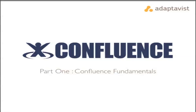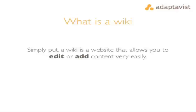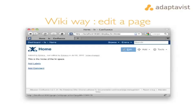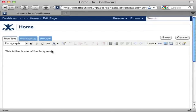It's useful to know what a wiki is and how it differs from a standard website. A wiki is a website that allows you to edit and add content in a very simple and easy way. This is how you edit and add content in Confluence. To edit a page, simply select the edit icon, change the content of the page and then select save.